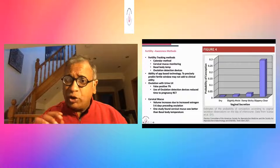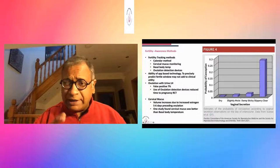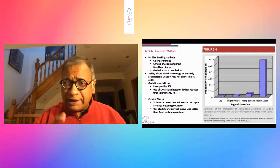If you look at cervical mucus, the volume increases due to estrogen. So you see an increase of cervical mucus five to six days preceding ovulation. And in fact, it may be better than the basal body temperature.